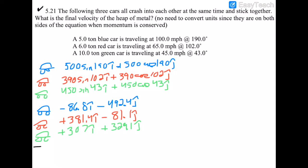After the crash the three cars form one heap, so we add all the components. For i-hat: 307 + 381.4 − 86.8 = +601.6 î. For j-hat: 329.1 − 81.1 − 492.4 = −244.4 ĵ. This total momentum must be conserved, so it equals the momentum of the combined wreck after the collision.